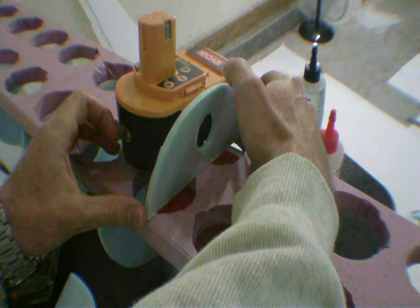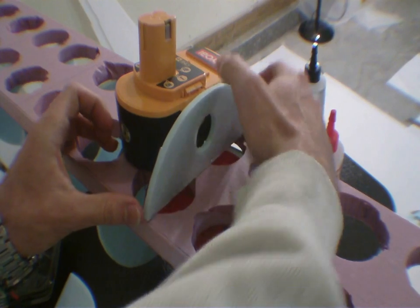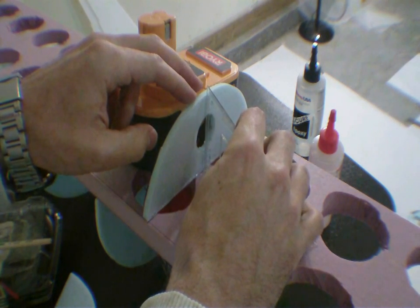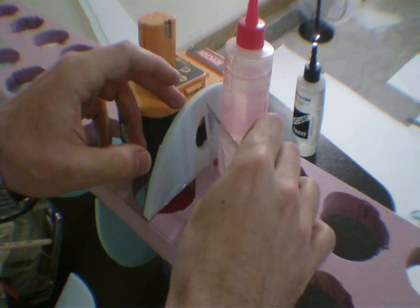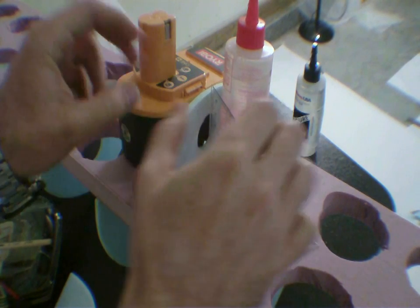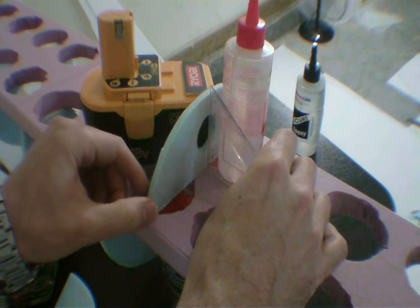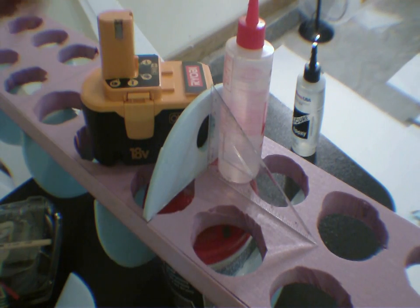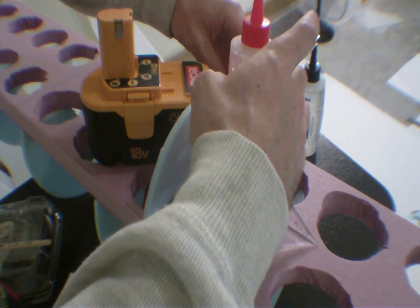Just like that, right on the line. Perfectly straight across on the line. Get my speed square. I want this to be, I want it to be perfect. I'm using that to prop up the speed square so that everything is straight.